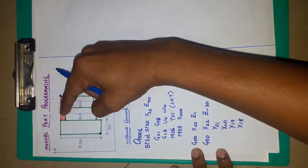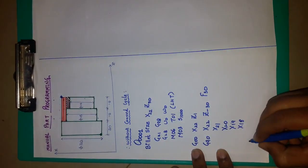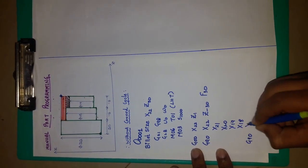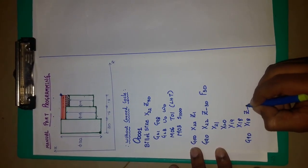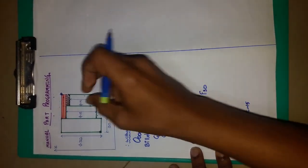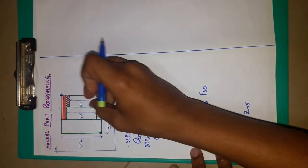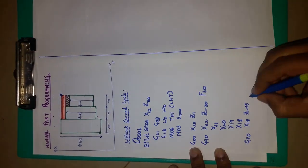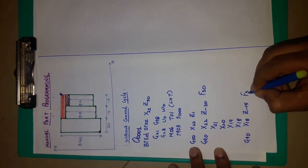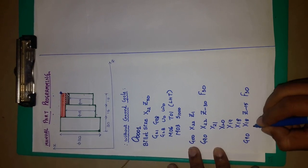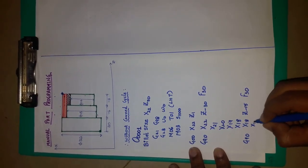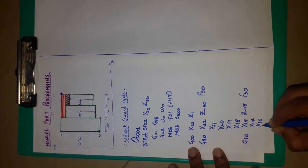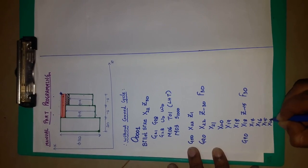Now I am going to give the second step from 18 mm to 14 mm, which is written as G90, X18, Z minus 15, because this step is only 15 mm in the Z direction. F is 30. X18 to X14: X17, 16, 15, and 14.